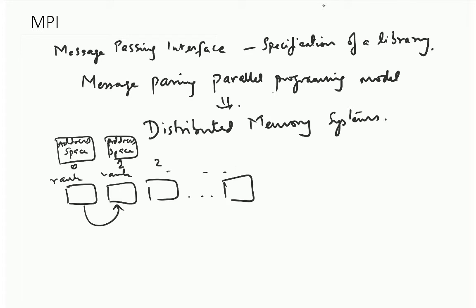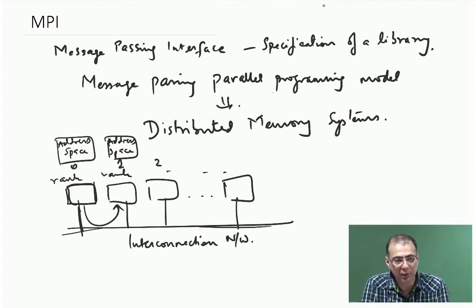Distributed memory systems, very large scale systems, are typically organized as nodes which are then connected to some interconnection network. MPI is ideally suited for such environments, but again you can run it on a single node with multiple ranks running on the same node. They will be launched as separate processes.